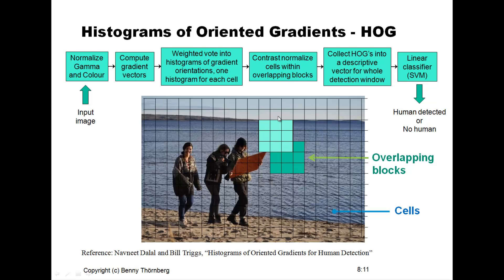They combined a number of cells — in this case, three by three cells — into one block, and within this block they applied contrast normalization of the histograms. They then analyzed the complete image using a number of overlapping blocks covering the complete detection window. For each one of these block positions, they generated a contrast-normalized histogram, and combined all of these histograms into a larger, complete HOG descriptor.